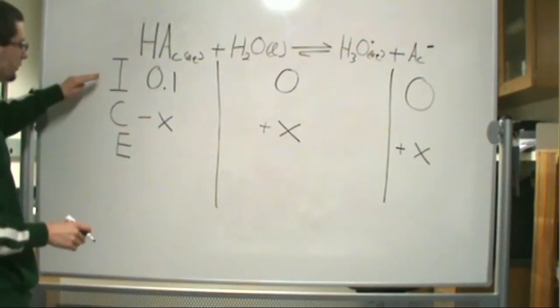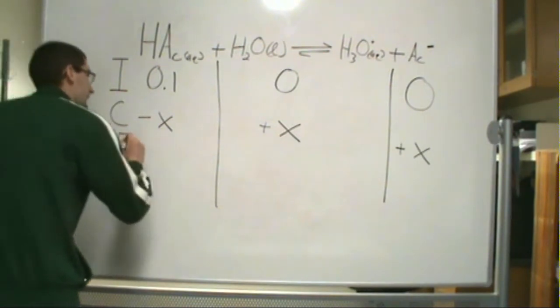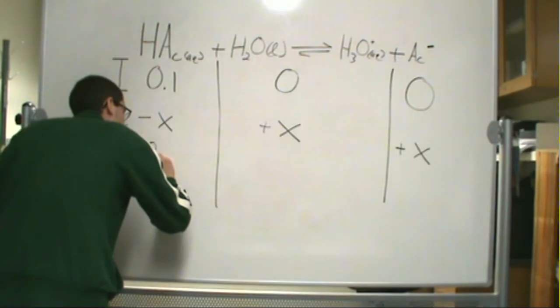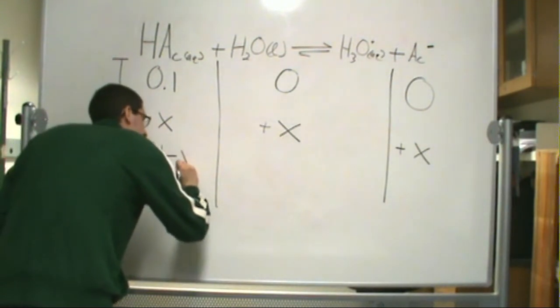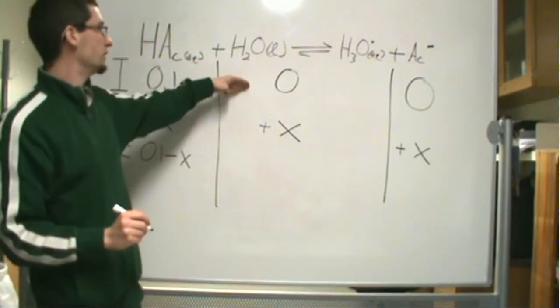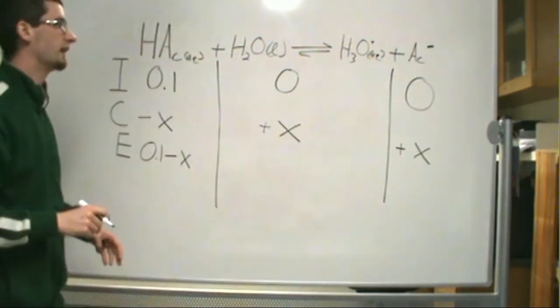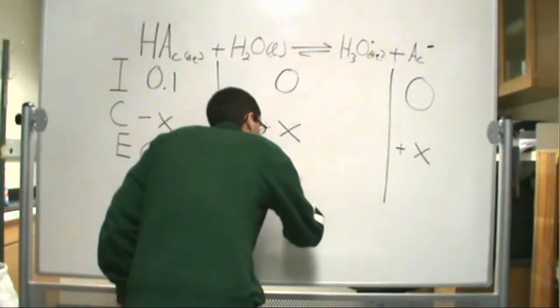Next, at equilibrium, what you do is you add your I to your C. So in the case for acetic acid, we have 0.1 minus X. In the case of these other two, since we have no initial concentration of either the hydronium ion or the acetate ion, they're just going to be X.